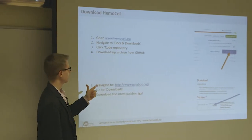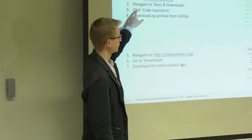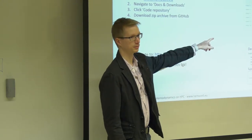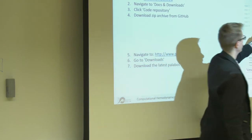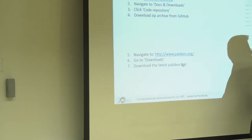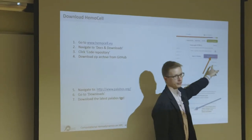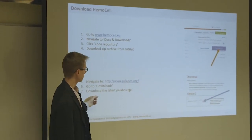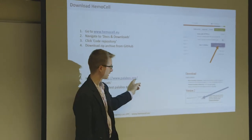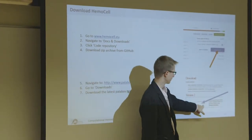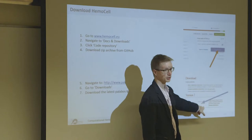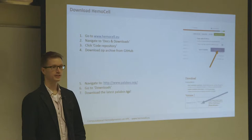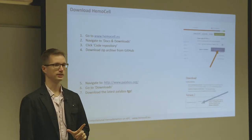You will need two components. One is HemoCell itself, available from hemocell.eu — you can navigate to the GitHub repository, create a compressed archive, and download it to your notebook. Then do something similar with Palabos: navigate to the Palabos site and download the tar.gz version 2.0. In the end you will have two compressed files on your notebook.